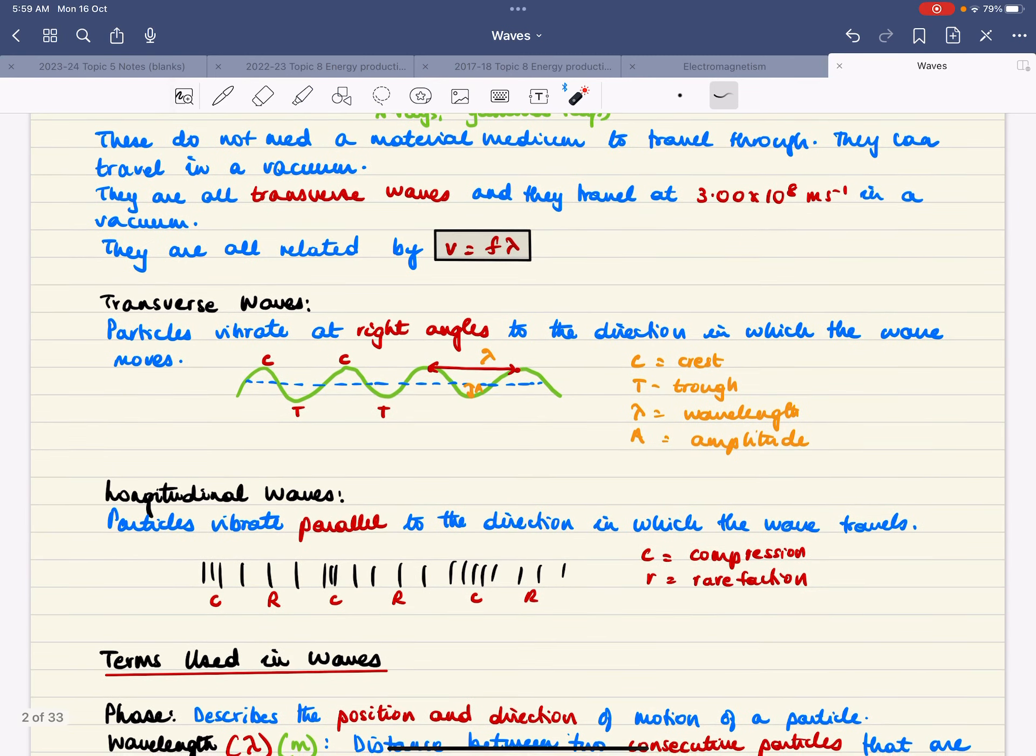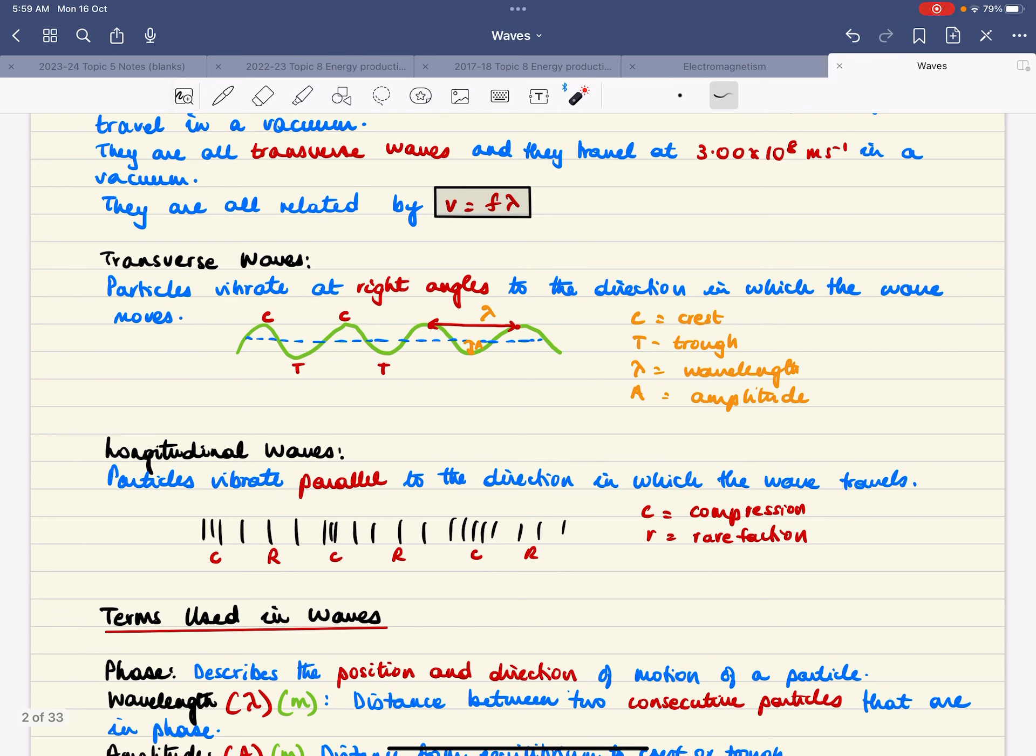Longitudinal waves. These particles vibrate parallel to the direction in which the wave goes. So if the wave is traveling this way, the particles go back and forth. Where they come together, those are areas of compression, and where they go far apart from each other, those are areas of rarefaction.